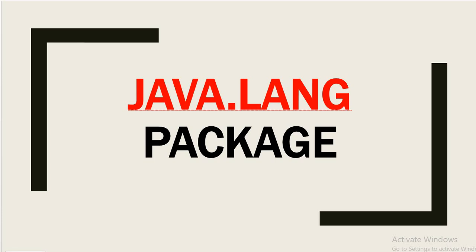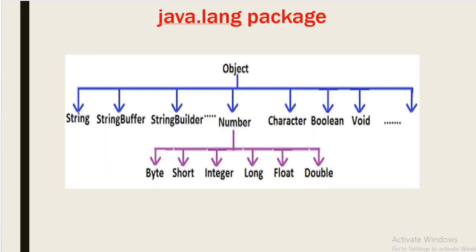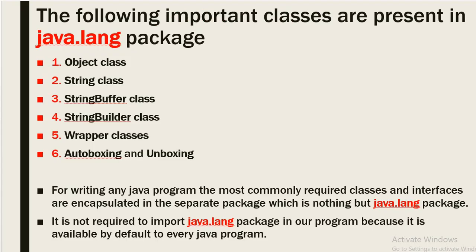Welcome back to this channel 'Gain Java Knowledge'. Today we are going to discuss the java.lang package — what it is and which classes and interfaces it contains. The java.lang package mainly contains String class, StringBuffer, StringBuilder, and the Number class. Number has multiple child classes: Byte, Short, Integer, Long, Float, and Double. It also has Character and Boolean wrapper types.